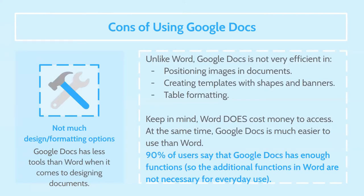Here are some of the cons of using Google Docs. When you use Google Docs, there's not as much design or formatting options — Google Docs has fewer tools than Word when it comes to designing documents. Word also has a few more templates, so if you're looking to start off with a base model and edit from there, you'll have more options using Microsoft Word. Unlike Word, Google Docs is not very efficient in positioning images in documents, creating templates with shapes and banners, and table formatting. Keep in mind, Word does cost money to access, but Google Docs is much easier to use.